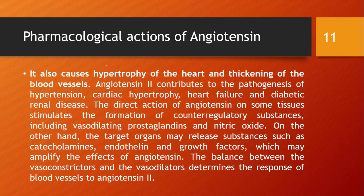Angiotensin 2 also causes hypertrophy of the heart and thickening of blood vessels, which is pathophysiologically important. It contributes to pathogenesis of hypertension, cardiac hypertrophy, heart failure, and diabetic renal disease. Many drugs prevent angiotensin 2 action either as antagonists at its receptor (AT1 blockers) or by preventing its formation (ACE inhibitors).